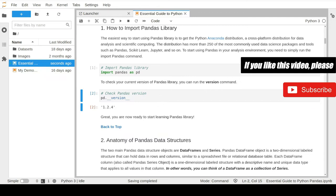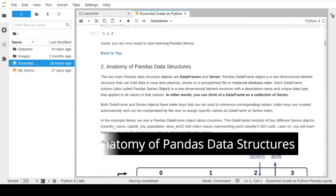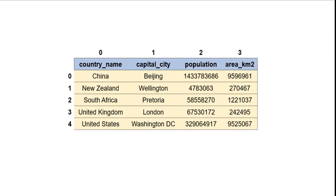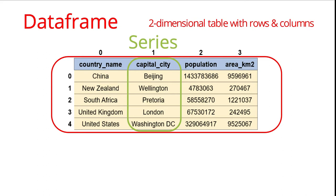Let's move now to the second lecture to describe the anatomy of pandas data structures. The pandas library has two main data structure objects: a DataFrame object and a Series object. The DataFrame is basically a two-dimensional structure that can hold data in rows and columns. In this example we see a DataFrame object about countries information where each row represents a different country.